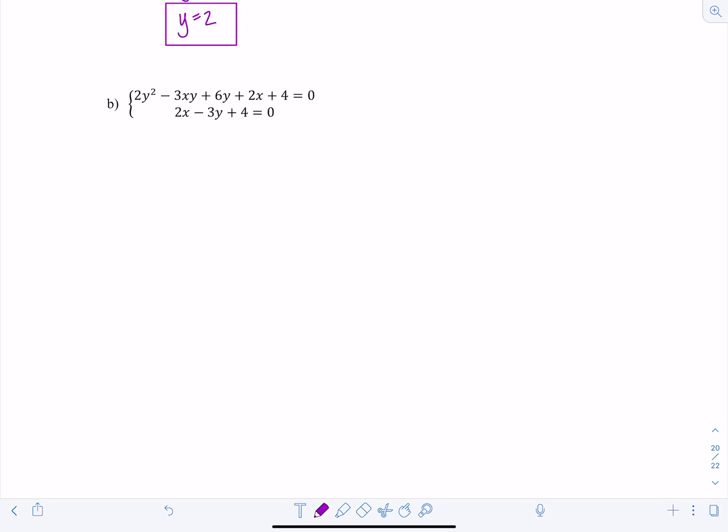Well, it's going to be super difficult if I were to try to solve for x or y in the first equation, so we're not doing that. We're going to solve for either x or y in the second equation, and then use substitution. So let's just solve for x since that term's positive. So I'll have 2x equals 3y minus 4, which means x equals 3 halves y minus 2.